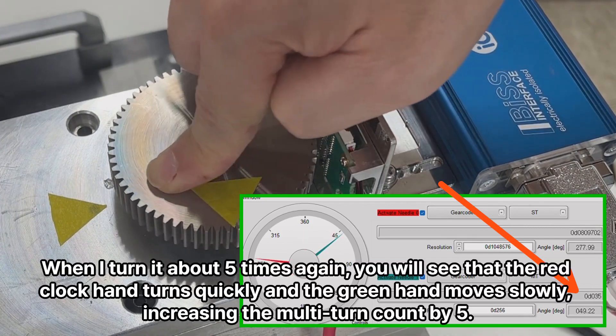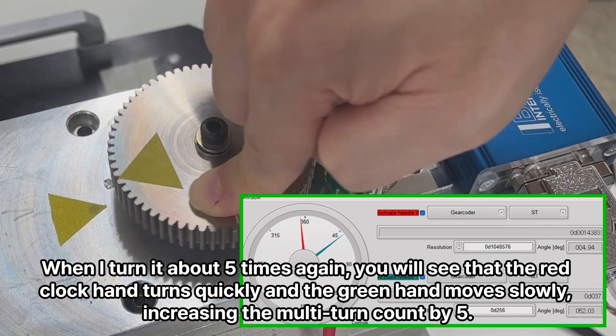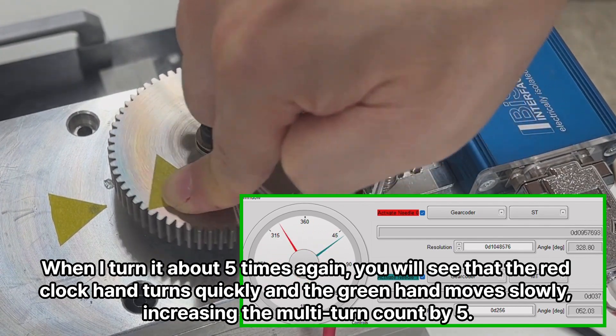When I turn it about 5 times again, you will see that the red clock hand turns quickly and the green hand moves slowly, increasing the multi-turn count by 5.